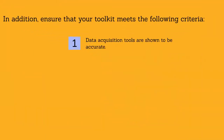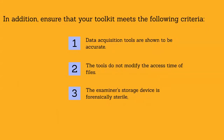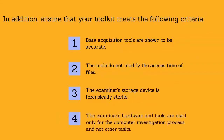Data acquisition tools should be shown to be accurate — proving accuracy is generally easier if you use well-known computer forensic software. The tools should not modify the access time of files. The examiner's storage device must be forensically sterile, meaning the disk drive does not contain any data before it is used. You can determine this by running a checksum on the device; if the checksum returns all zeros, it does not contain any data. The examiner's hardware and tools should be used only for the computer investigation process and not for other tasks.